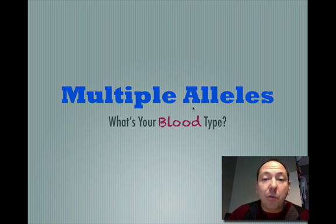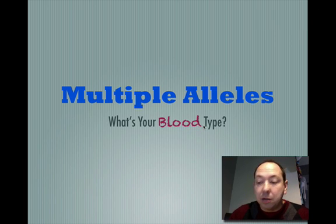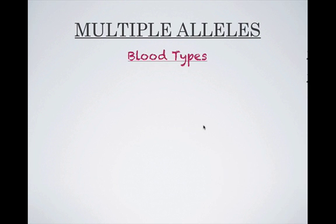The number one example we always talk about is blood. What are the four different blood types? You may know yours or you might not, but a doctor would know and they could test for it. The four different blood types are: type A, type B, type AB, and O.